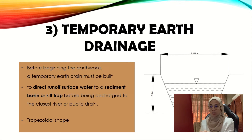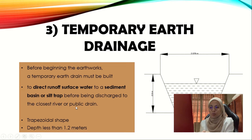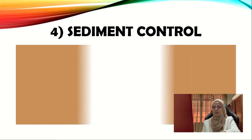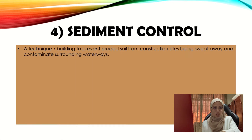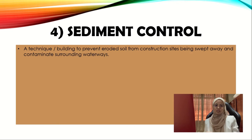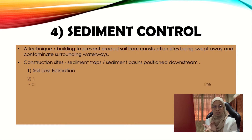As seen in the picture, the earth drainage design is trapezoidal in shape. Due to the requirement, the depth must be less than 1.2 meters, so they designed it with a depth of 0.9 meters. The fourth criteria is sediment control — a technique or structure that helps prevent eroded soil from construction sites being swept away and contaminating surrounding waterways. In most construction sites, sediment traps or sediment basins must be positioned downstream. In the sediment control process, there are three calculations: soil loss estimation, sediment yield estimation, and sediment basin design.